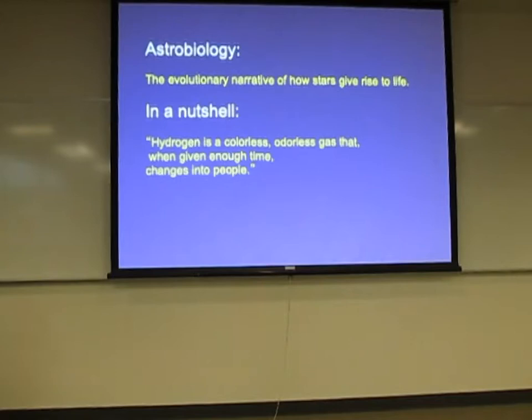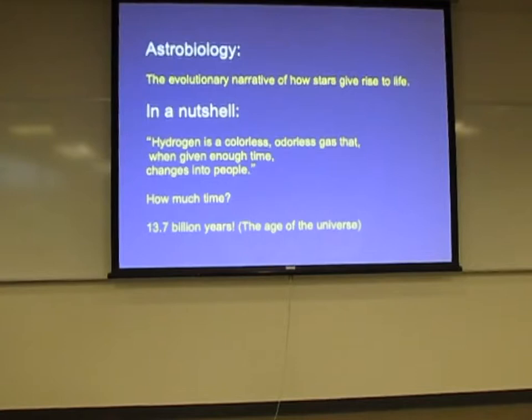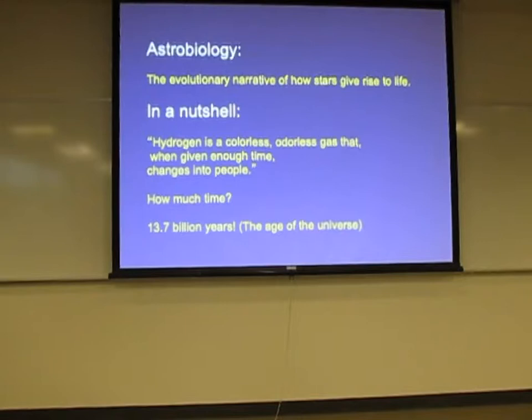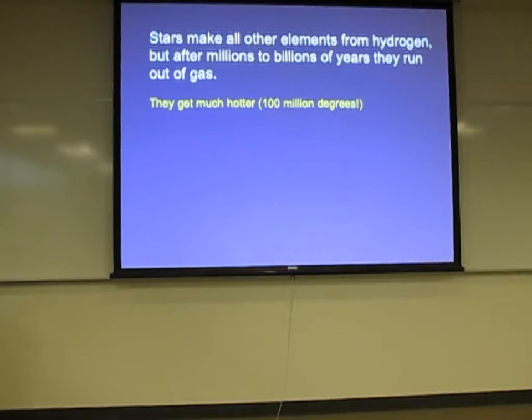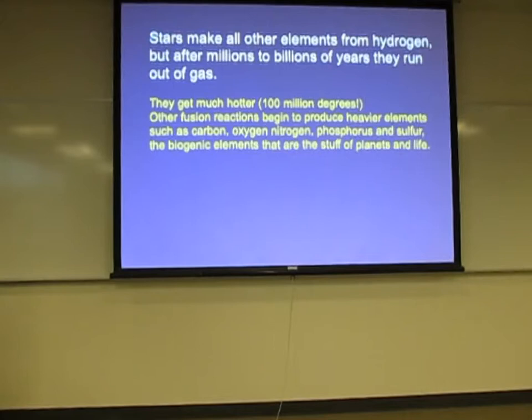How much time? The age of the universe — over 13 billion years to get this group of people in this room. Stars make elements from hydrogen; after millions to billions of years they run out of gas. Our own sun will run out of gas about five billion years from now. When they run out of gas, they collapse in on themselves, the temperature goes up to 100 million degrees, and fusion reactions begin to produce heavier elements.